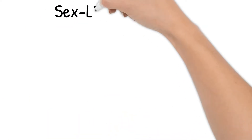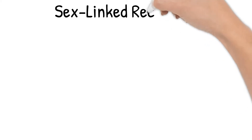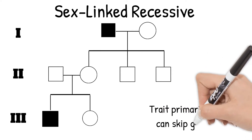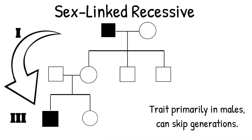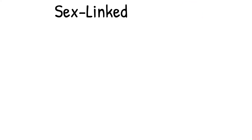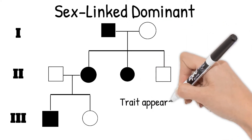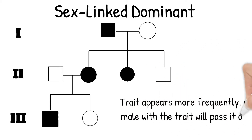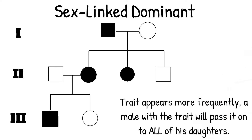Sex-linked genes can also be dominant or recessive. Sex-linked recessive shows primarily in males and can skip generations. These can be tricky to tell apart from autosomal recessive. A sex-linked dominant trait is more frequent in a pedigree chart, and a male with the trait will pass it on to all of his daughters.